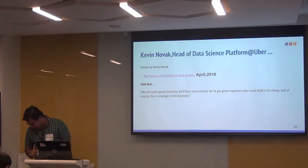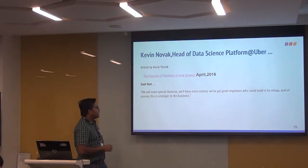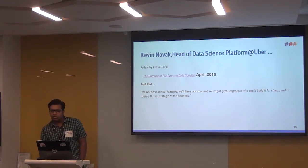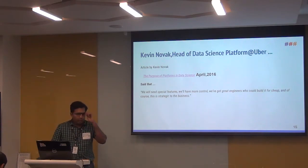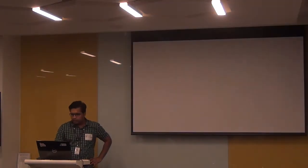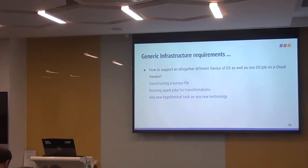Kevin Novak, a data scientist at Uber, came up with an article in 2016, and in that article there is a special line which says we will need special features because data scientists have no foundation limit to what they think about or want to do. So we need special features, more control, and great engineers who can do that. With the same philosophy we are going to look into the general infrastructure requirements.